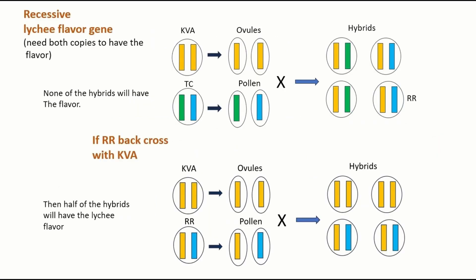Dragon fruit have diploid genomes, meaning in their cells each chromosome has two copies. We're using a yellow bar representing the lychee flavor gene. In KVA, because they have lychee flavor, both gene copies have to be present. In Trisha we'll have none. During the process called meiosis to create germ cells, each chromosome will go into one germ cell.